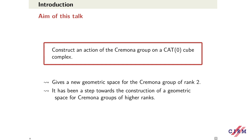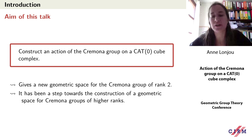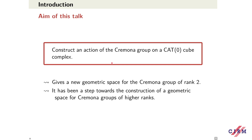This construction gives a new geometric space for the Cremona group. It is a natural way to construct it, it unifies many known results, and extends them to any field. We also had in mind constructing CAT(0) cube complexes for Cremona groups of higher rank — rational transformations of projective space, not just the projective plane. But in this talk I will focus on the first part: constructing a CAT(0) cube complex for the Cremona group of rank 2.